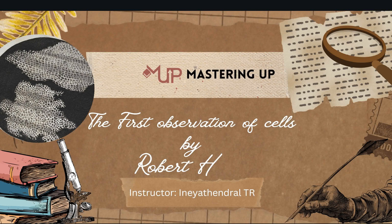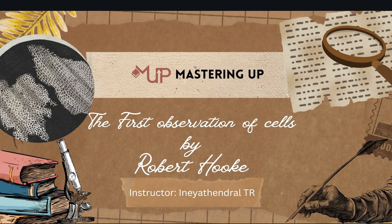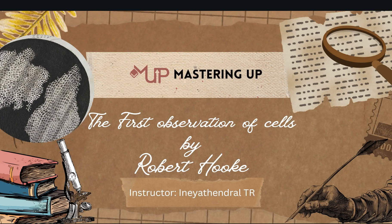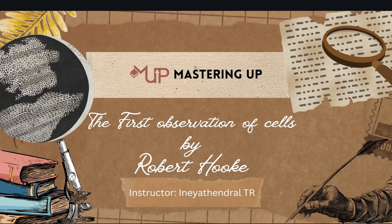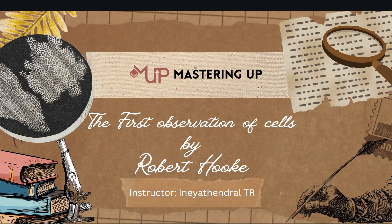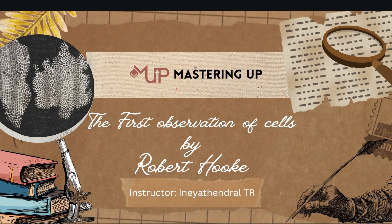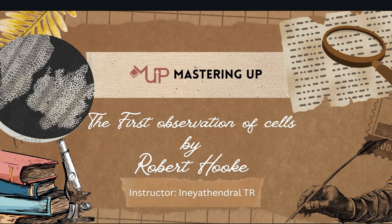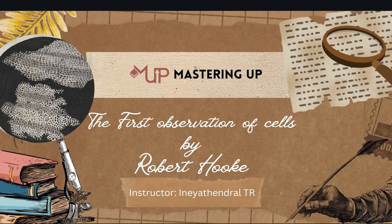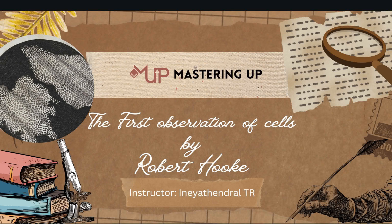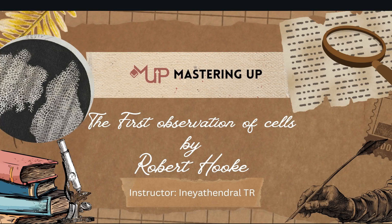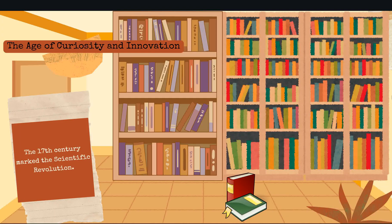Welcome back to Cell and Molecular Biology course. In this video, we will explore the first observation of cells by Robert Hooke. In the year 1665, a discovery was made that would change the course of biology and science forever. Robert Hooke, a curious scientist of his time, peered into a microscope and observed something no one had ever seen before — the building blocks of life. This is the story of how he discovered cells and laid the foundation for modern biology.